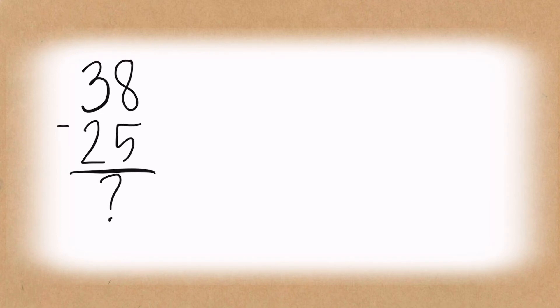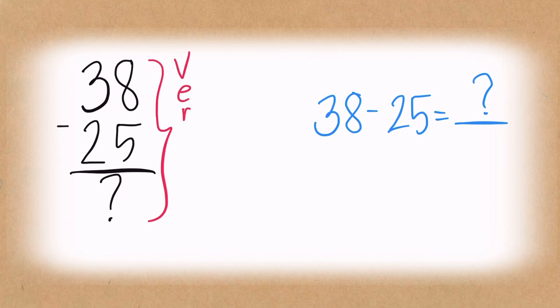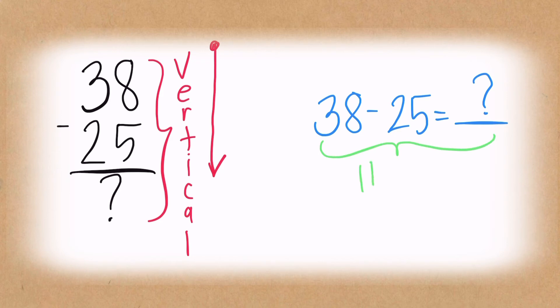Let's focus on this. Usually you see problems written this way: 38 minus 25 equals blank. But did you also notice that sometimes a problem is written in another way, just like this: 38 minus 25 equals blank. What's the difference? The first one we call the vertical number sentence — when we say vertical, we write the numbers from top to bottom. The other way we call the horizontal number sentence.